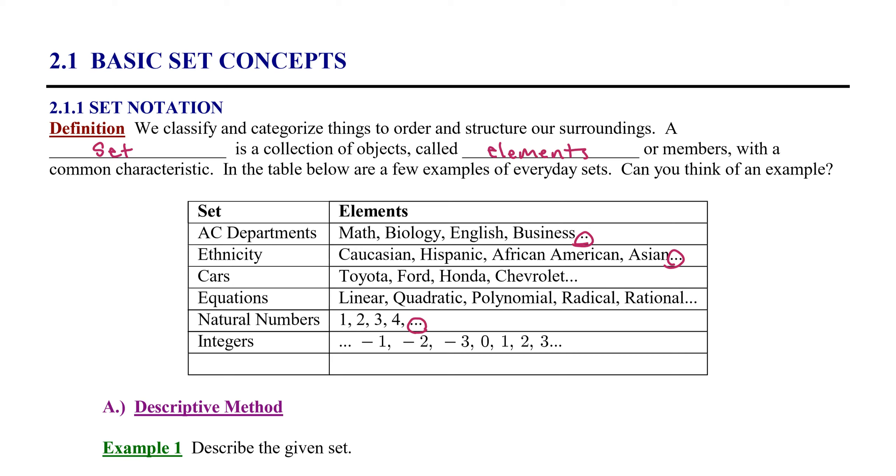We also have another set of numbers called the integers. They are the natural numbers and the negative versions of those natural numbers in addition to zero. So, negative one, negative two, negative three, zero, one, two, and three. This is an infinite set in two directions. So, these are some basic examples of everyday sets.